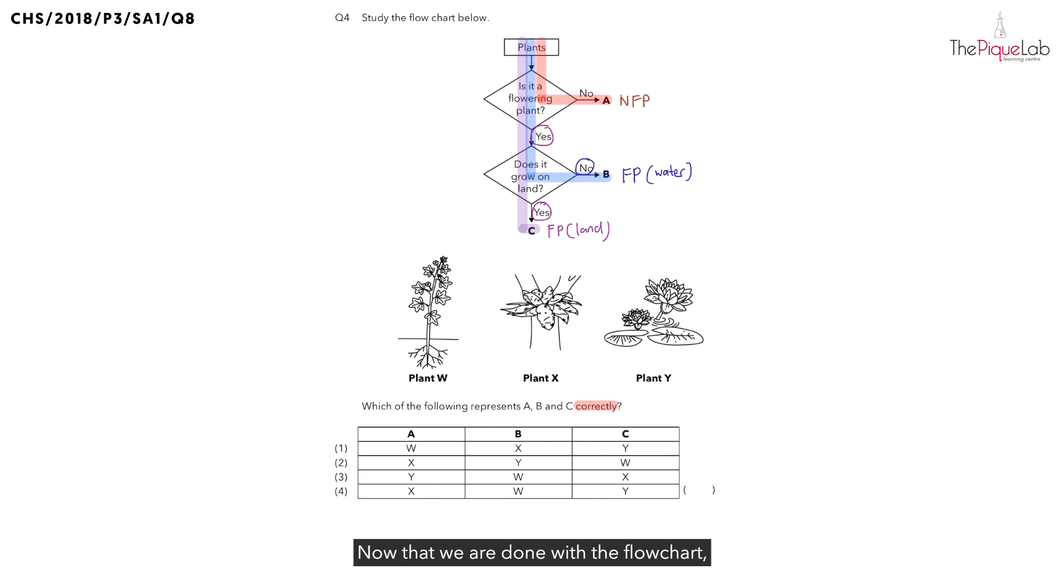Now that we are done with the flowchart, we are ready to take a look at A first. Which of the plants below, W, X, or Y, best represents plant A? Remember, we said plant A is a non-flowering plant.